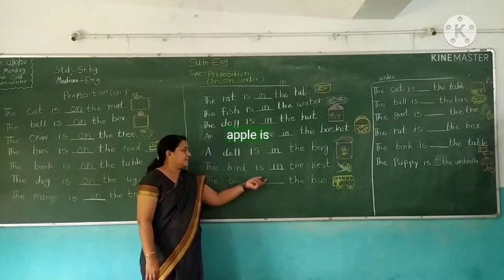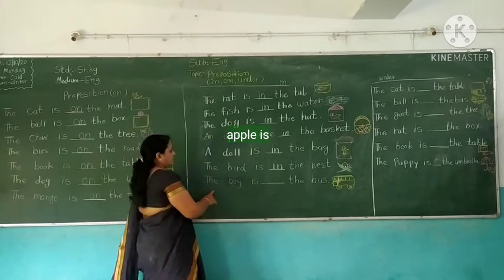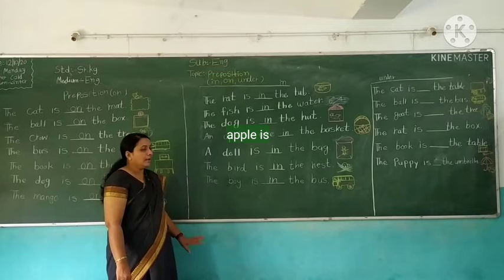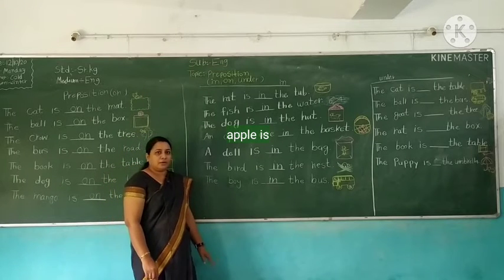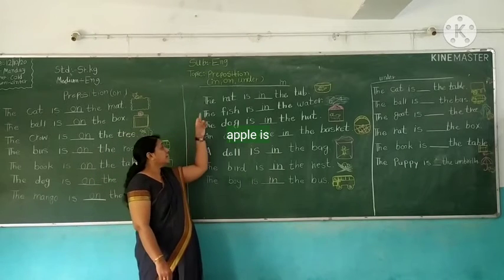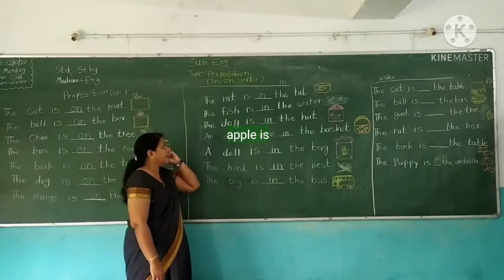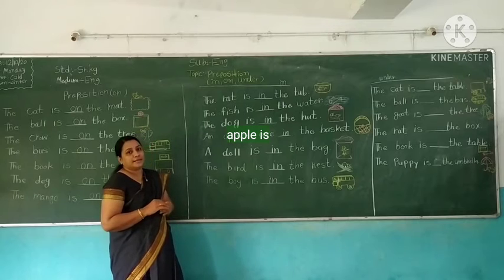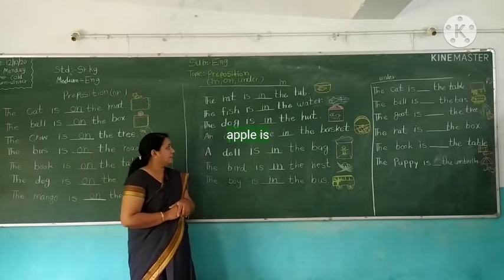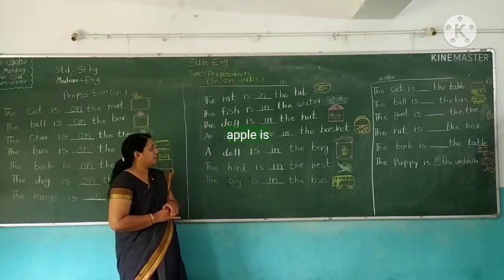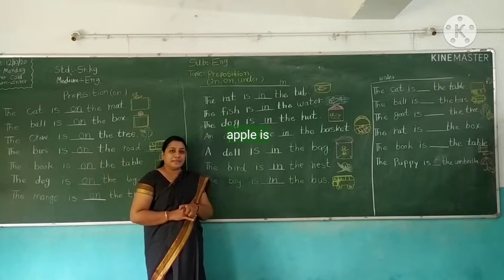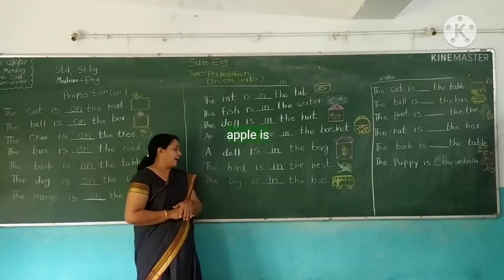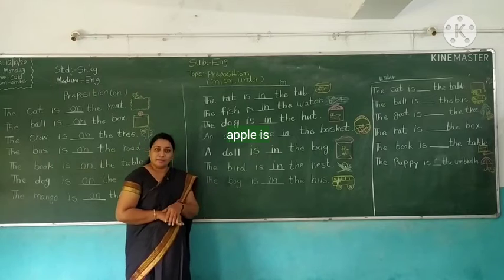Then the boy is in the bus. The boy is in the bus. Understood? Again I repeat: everybody copy down in your notebook. This is the 'in' preposition. The rat is in the tub — first look at the picture, then make the sentence. The fish is in the water, the dog is in the hut, the apples are in the basket, a doll is in the bag, the bird is in the nest, and the boy is in the bus.